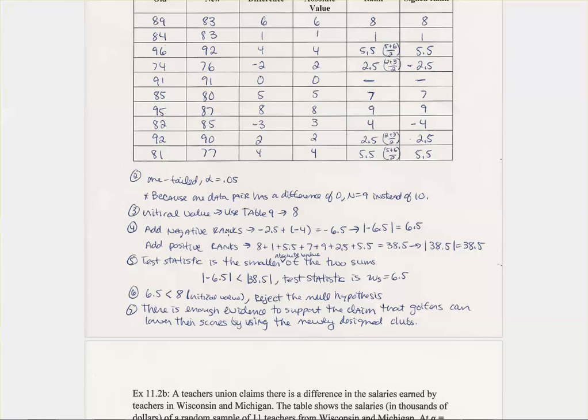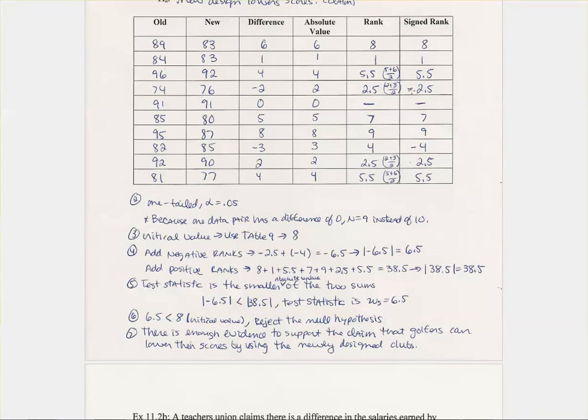So now what you do, you add your negative ranks. So you literally go up and say which of your signed ranks are negative. In this case, it's only negative 2.5 and negative 4. So you add those together, and then you'd get the absolute value of that. You then add your positive ranks, which is basically all of the rest of your ranks. So you get this one. You would take the absolute value, but it's already positive, so it doesn't matter. Then your test statistic is the smaller absolute value of the two sums. So since 6.5, the absolute value there, is smaller than your 38.5, your test statistic is your 6.5.